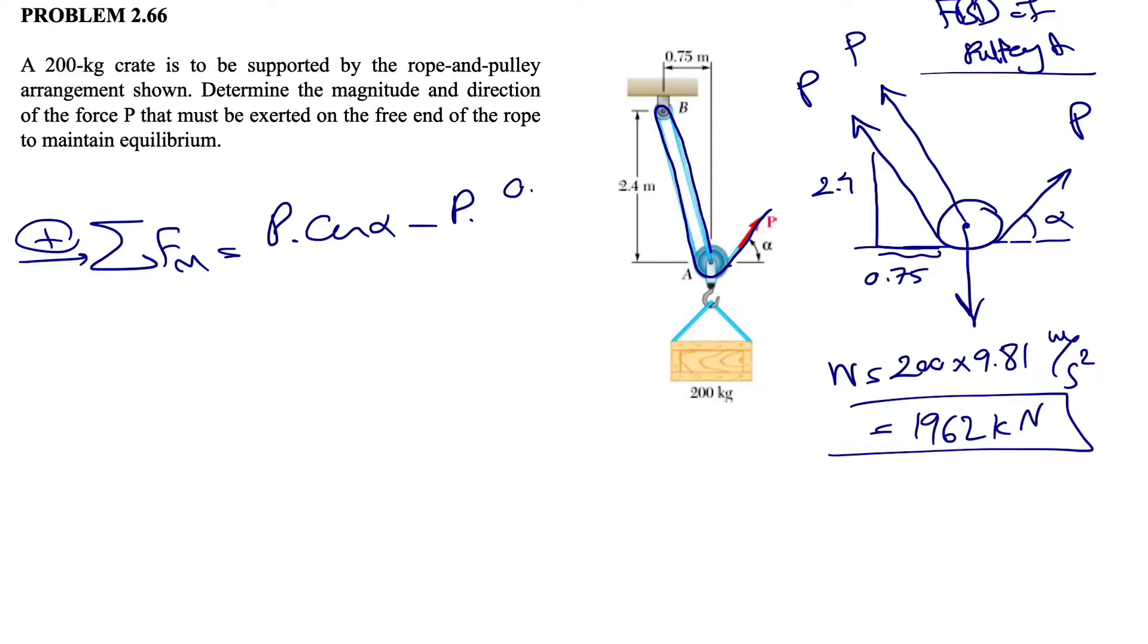For Fx, we have on the right side of pulley A the force P, so we'll have P cosine of alpha minus P times the sine of alpha, which will be minus P cosine of the other angle on the left side. If you want to find the cosine, we simply have 0.75 divided by the hypotenuse of the right triangle that we have, which will be square root of 0.75 squared plus 2.4 squared.